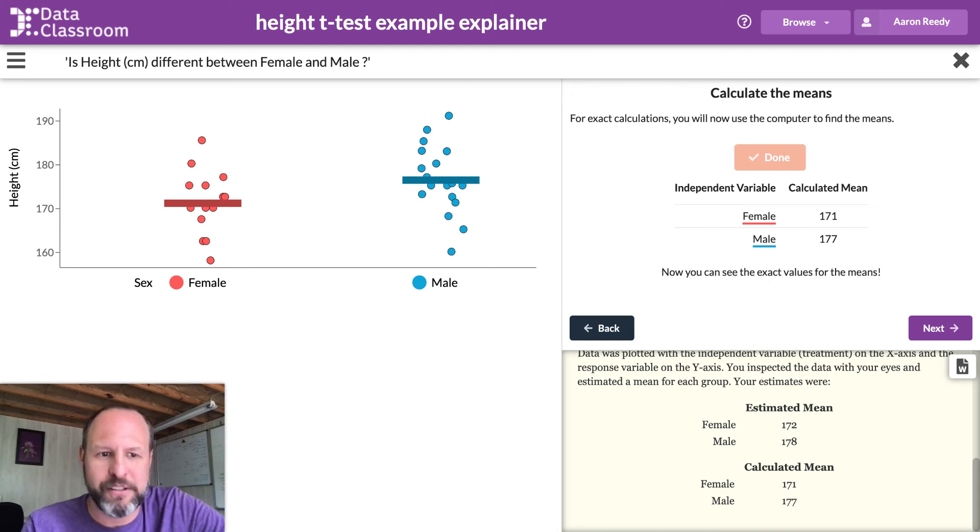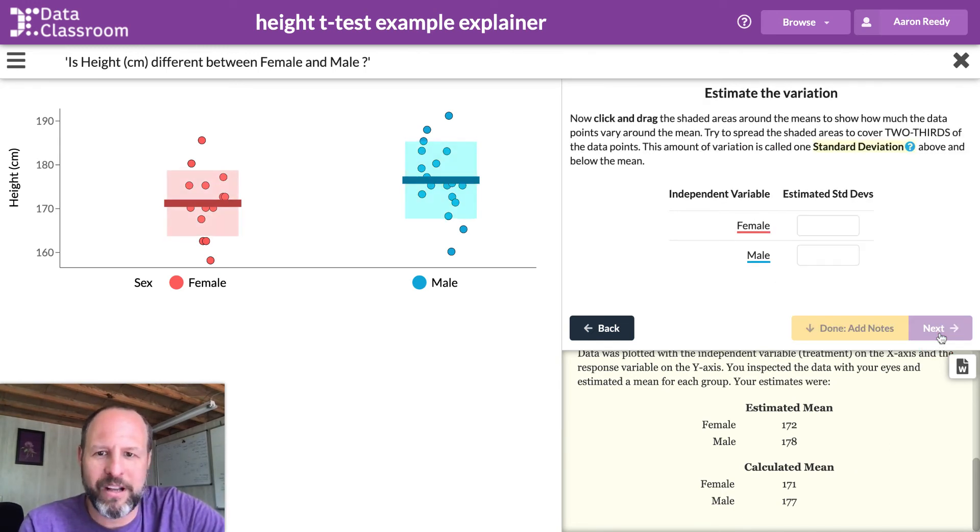This tends to be a confidence booster for most students, as the human eye tends to be very good at this, of estimating where the mean is. So I go on to the next step here, where I'm going to estimate the variation.